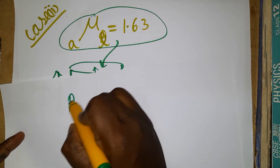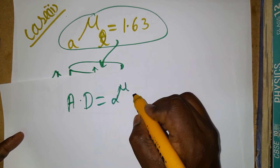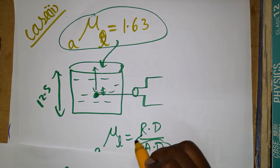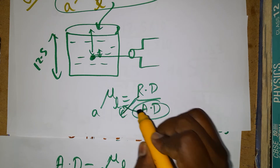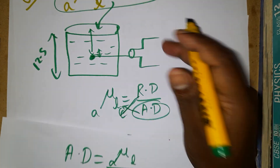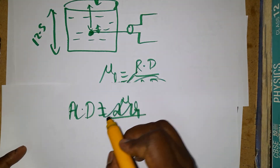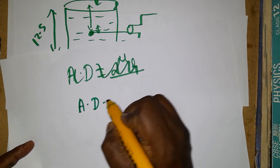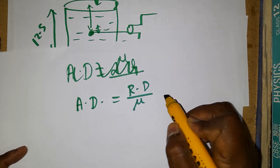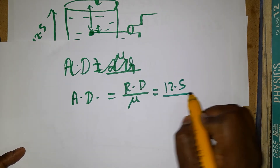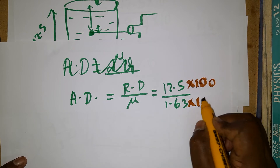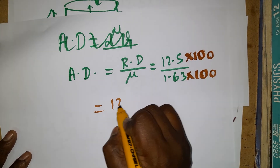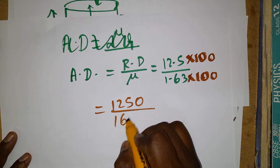For Case 2, we need to find the new apparent depth. Rearranging the formula: apparent depth equals real depth divided by refractive index. The real depth is 12.5 centimeters and the refractive index of the liquid is 1.63. Multiplying numerator and denominator by 100 gives 1250 divided by 163.